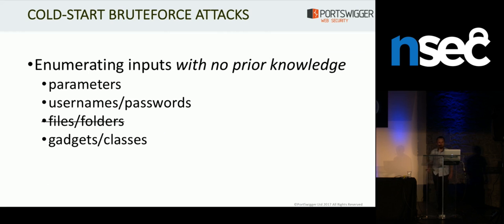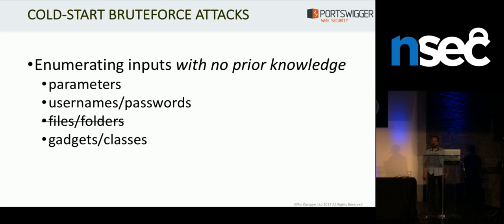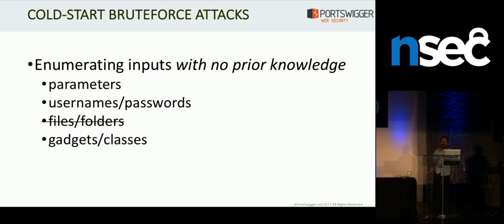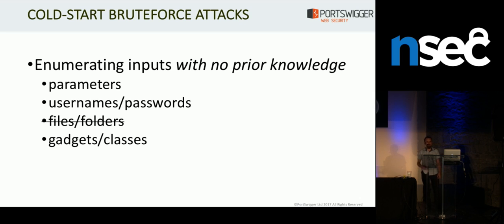So what else can we do with this technique? One thing we can do is cold-start brute force attacks — enumerating inputs where you've got no prior knowledge of what the response to a valid input looks like. The example from the start where you want to enumerate usernames but don't have a single valid username to begin with is the perfect example. And it's the same with parameters. You can brute force parameters really, really fast because you can specify multiple parameters per request — probably a few hundred — and then do a binary search to figure out which parameters actually cause the application to change behavior. So that's something I'll be looking to implement in the future. And LetMeIn still doesn't actually work because I haven't ported it to use this new different technique, so I'm going to be implementing that too — hopefully you'll get something you can just point at a login page and it will get you some credentials.